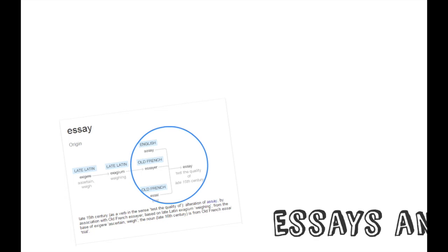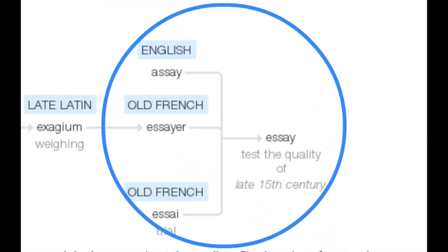Essays first. Looking at a little bit of the etymology of the word — using one of those Google cards that you get when you type 'define' into a Google search engine. Typing 'define essay' gives back a card showing that the current word 'essay' goes back to the late 15th century and means something like 'test the quality of.' In English, an essay office was a place where you took your gold or silver to have its percentage of gold and silver determined.